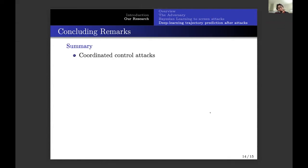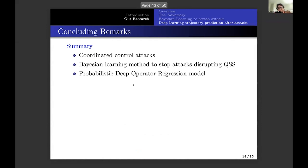In summary, I have explained a little bit about the type of attacks we're studying, we're trying to defend against, which are coordinated attacks. We described a Bayesian learning method to stop attacks when disrupting just steady-state operation of the power grid. We also proposed a probabilistic deep operator regression model to predict the transient response during attacks that are going to create large disturbances. And we use the DeepONets to approximate these operators.